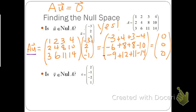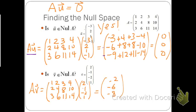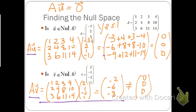You should now take the time to see if v is in the null of A — pause the video and work this example. Working out A times v, we want to get the zero vector. We notice this is not equal to the zero vector, so the vector v is not in the null of A.